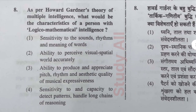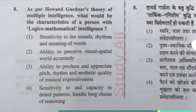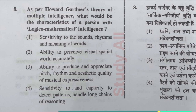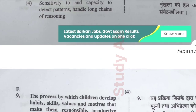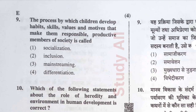Question number eight: As per Howard Gardner's theory of multiple intelligences, the characteristic of a person with logico-mathematical intelligence is — option four: sensitivity to and capacity to detect patterns, handle logical chains, and reasoning.